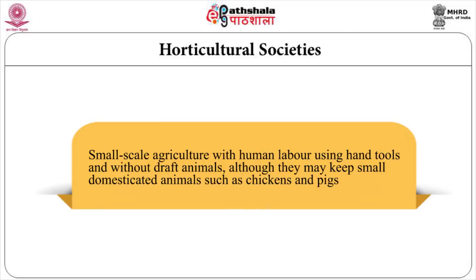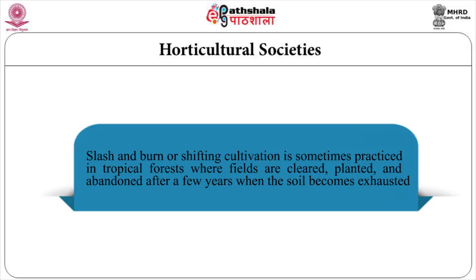Horticultural societies practice small-scale agriculture with human labour using hand tools and without draught animals. Although they may keep small domesticated animals such as chickens and pigs, the extent to which horticulturists alter the landscape and control the reproduction of domesticated species can vary greatly. Slash and burn or shifting cultivation is sometimes practiced in tropical forests where fields are cleared, planted and abandoned after a few years when the soil becomes exhausted. Swidden agriculture is a more sustainable system in which fields are reused regularly after a fallow period.